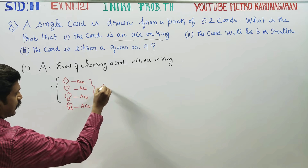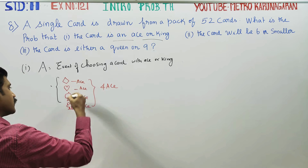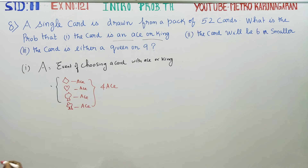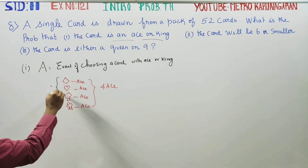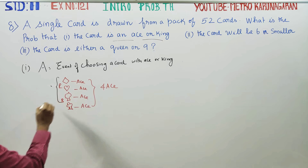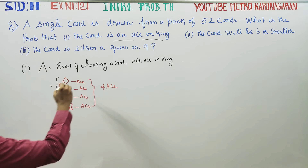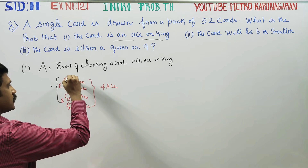Total of four aces of the same shape — red color and black color. On the other side, that's the king. There are 4 kings as well.